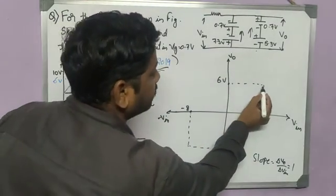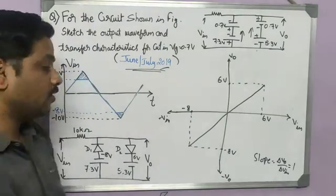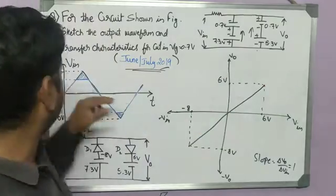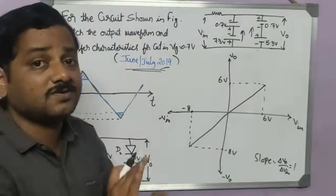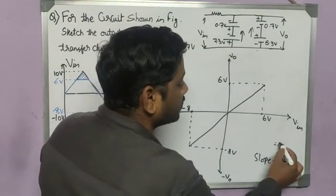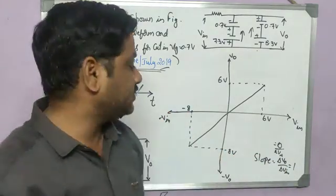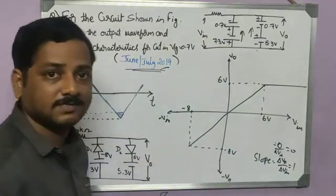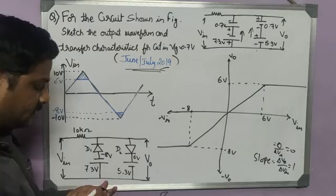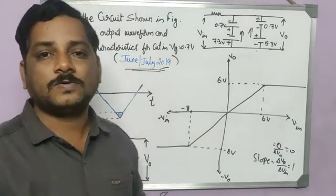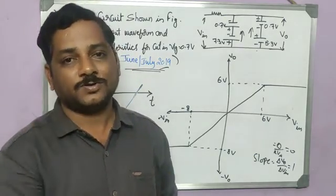Beyond the 6 volt point, if the input is above 6, the output is constant at 6 — it is not changing. Since there is no change in output while input is changing, the slope is 0, meaning a horizontal constant line. Similarly, if the input is less than minus 8, the output is also constant, so from that point the line is also horizontal. This is how we plot the transfer characteristics and output waveforms for this given circuit. I hope this is clear — subscribe to my channel and share among your friends. Thank you.